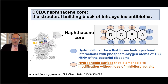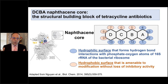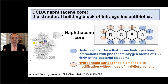Tetracycline antibiotics are all based on a four-ring core — the A, B, C, D rings fused together — known as the naphthacene core, hence the word 'tetra' in tetracyclines. The carbon atom positions are numbered one through twelve. The blue-colored positions represent the hydrophilic surface, which hydrogen-bonds with the phosphate oxygen atoms of the 16S ribosomal RNA. The orange positions are the hydrophobic surface, where modifications can be made to create different tetracycline drugs without losing inhibitory activity.